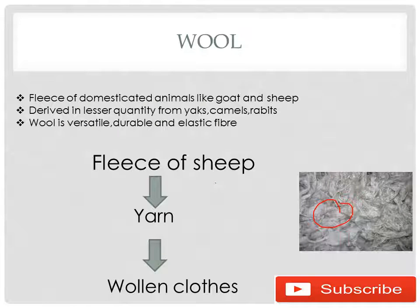Wool is obtained from domesticated animals like goats and sheep. It is also obtained in lesser quantities from yak, camels, and rabbits. Wool is a versatile, durable, and elastic fiber. In the diagram you can see the fleece of sheep — these are the threads of the sheep which are removed so that we can make yarn and finally wool and cloth.